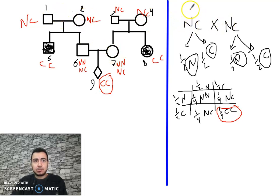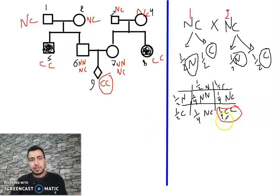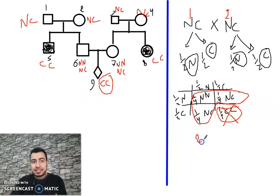By factorial analysis of parents 1 and 2 (NC × NC), the children can be NN, NC, or CC. Since individual 6 is already confirmed normal, CC is excluded. Among the remaining three outcomes — 1 NN and 2 NC — the probability of being NC is 2 out of 3.